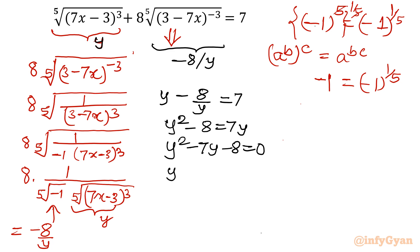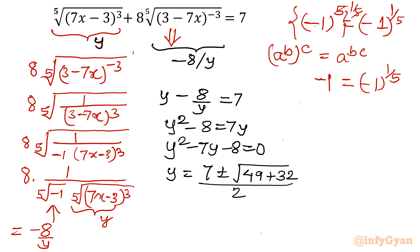I will use the quadratic formula. y equals minus b, so 7, plus or minus the square root of b squared, which is 49, minus 4ac, which gives plus 32; all divided by 2. That gives y equals (7 plus or minus square root of 81) over 2, and since the square root of 81 is 9: taking the plus sign gives 16 over 2, so y equals 8; taking the minus sign gives minus 2 over 2, so y equals negative 1.